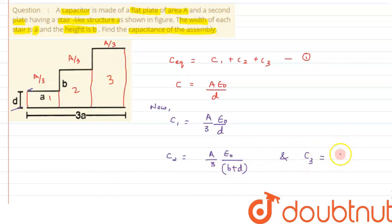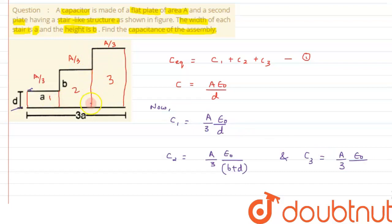Similarly, for C3 the area is A/3 again, ε₀ is unchanged, and the separation between the two plates is d + b + b = d + 2b. So C3 = (A/3)ε₀ / (2b + d).